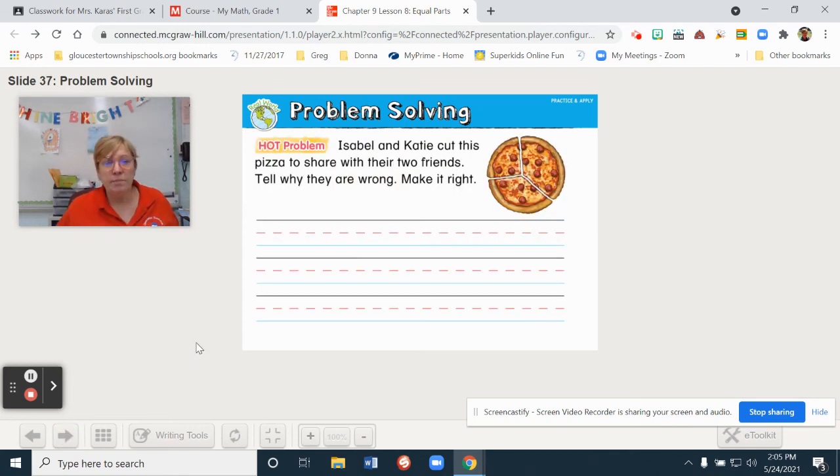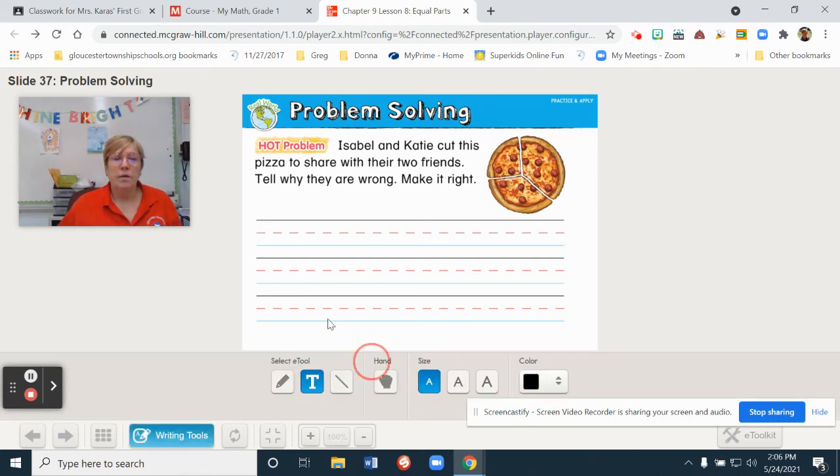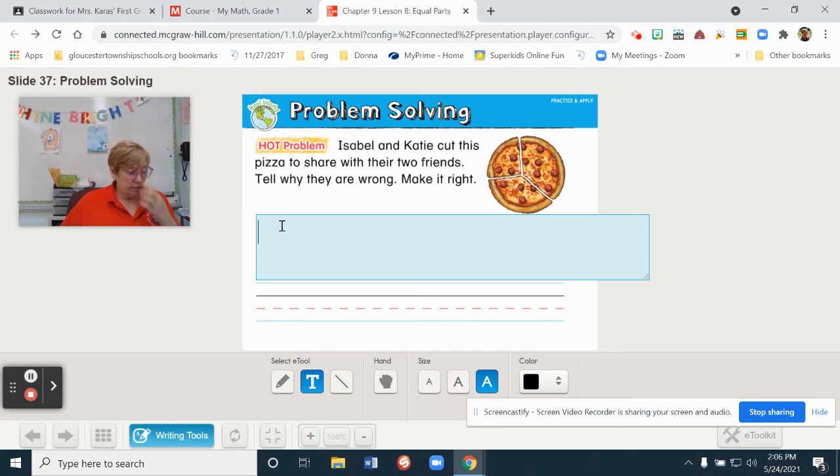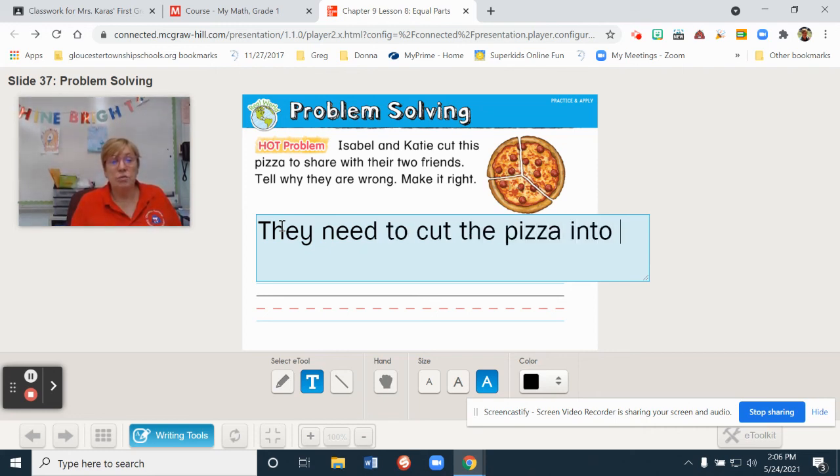Isabel and Katie cut this pizza to share with their two friends. Tell why they are wrong. Make it right. So, if there's Isabel and Katie plus two friends, how many? That's right. Two plus two is four. So, what do they have to do to make it right? There's not enough shares there, is there? No. So, they need to cut the pizza into four equal pieces.